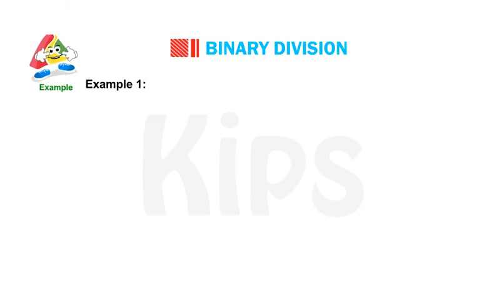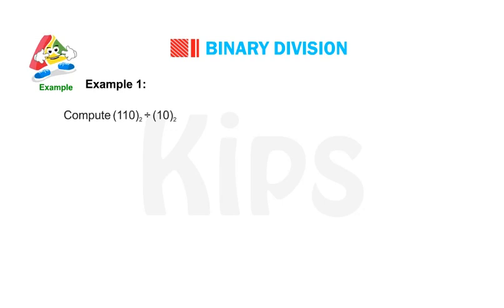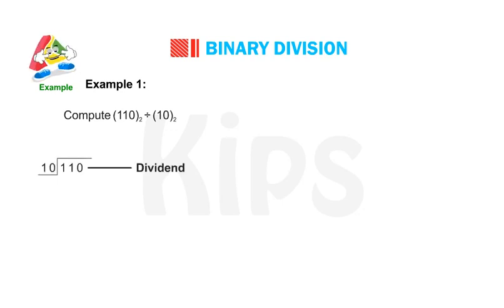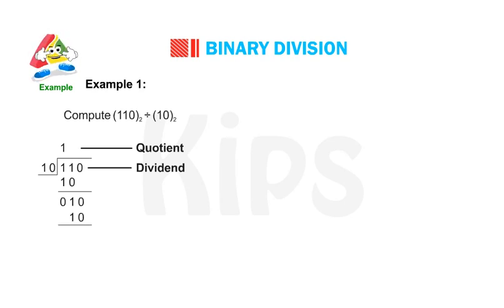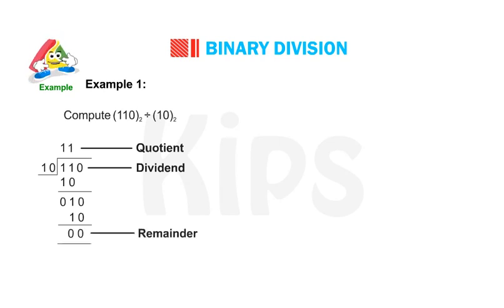Example 1: Compute binary 110 divided by binary 10. Dividing binary 110 by binary 10, we get quotient 1 and remainder 01. For the next division our dividend is binary 010; dividing this by binary 10, we get quotient 1 and remainder 0.